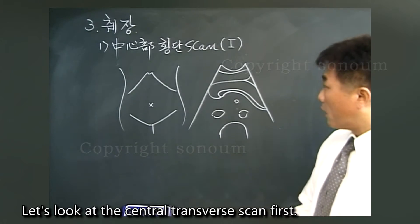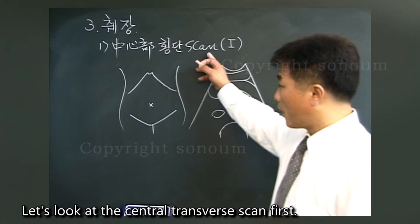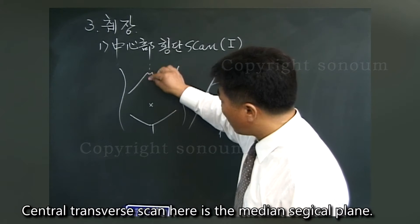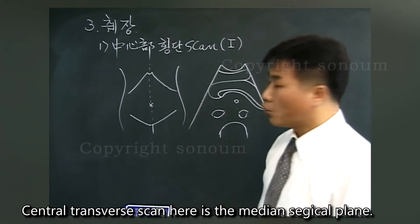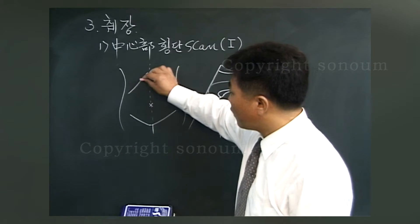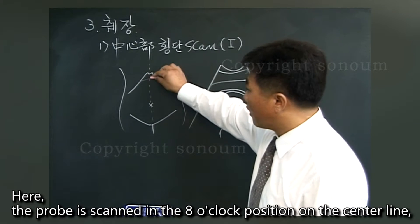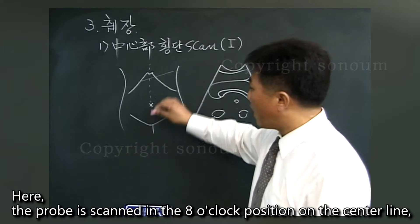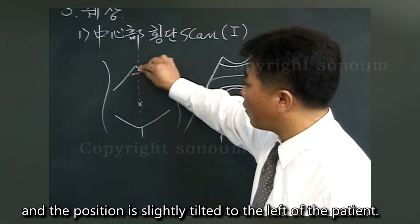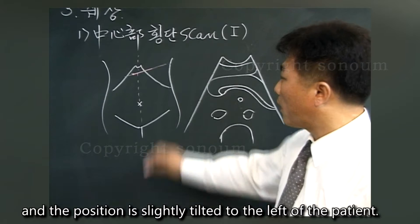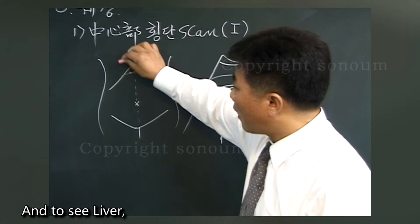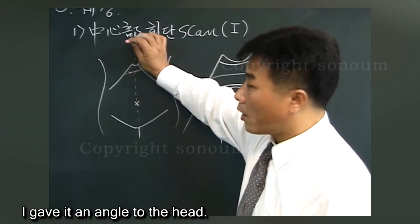Let's look at the central transverse scan first. The central transverse scan here is the median surgical plane. There is a center line, and the probe is scanned in the 8 o'clock position on the center line. The position is slightly tilted to the left of the patient, and to see the liver, I gave it an angle toward the head.